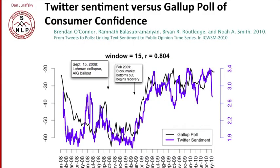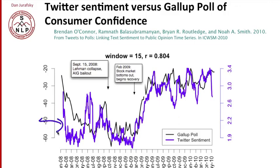Sentiment can also be applied to things that aren't products. For example, measuring consumer confidence. This graph from O'Connor et al. looks at sentiment from Twitter tweets to try to predict consumer confidence over time. The blue line shows sentiment as expressed in Twitter — positive and negative sentiment. The black line shows Gallup poll data. They show a pretty good correlation between Twitter sentiment and the Gallup poll.